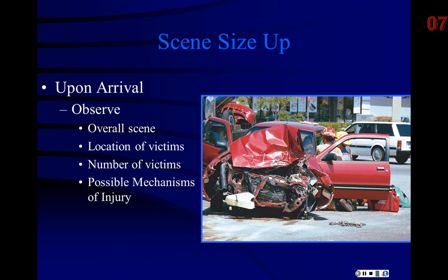Once I get there, I need to look at my overall scene. If you don't look around all areas of an accident, you will miss big important things. What are the locations of the victims? How many do I have? We'll learn about MCI later. And then possible mechanism of injury — we'll start talking about kinematics, which lets us suspect or predict injury patterns based on the mechanism.